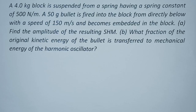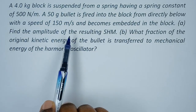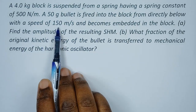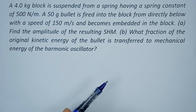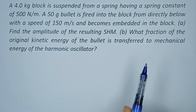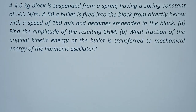Hi guys, let's go through this question under Simple Harmonic Motion. We have a block which is suspended from a spring having a spring constant of 500. A bullet is fired towards this object with a speed of 150 meters per second and it becomes embedded in the block. We have been asked to calculate the amplitude.